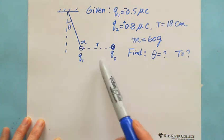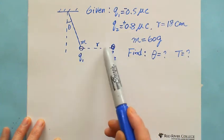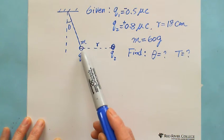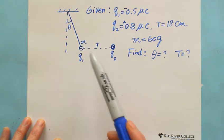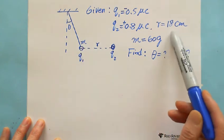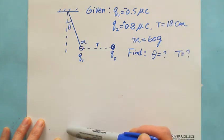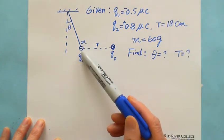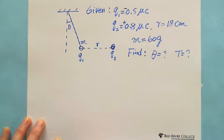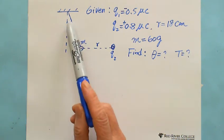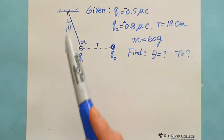In this situation, the distance when the small ball is balanced is 18 centimeters. The mass of this small ball is 60 grams. We're looking for the angle theta and the tension.